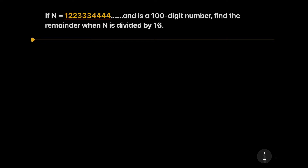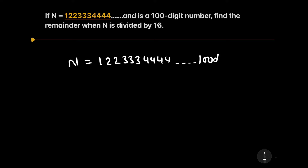Let us start to solve this question. Our question is: n is a 100-digit number, that is 1, 2, 2, 3, 3, 3, 4, 4, 4, dot dot — a 100-digit number — and when this number is divided by 16, we have to find the remainder.